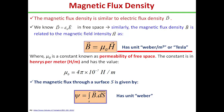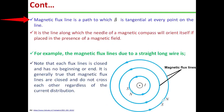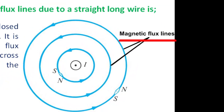A magnetic flux line is a path to which B is tangential at every point on the line. It is a line along which the needle of a magnetic compass will orient itself if placed in the presence of a magnetic field. The direction of B is taken as that indicated as north by the needle of the magnetic compass. The magnetic flux lines due to a straight long wire are shown here, determined using the same principles followed for electric flux lines, as discussed in electrostatics.